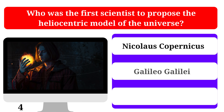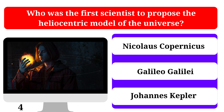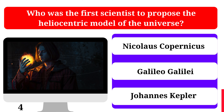Who was the first scientist to propose the heliocentric model of the universe? Galileo Galilei, Nicholas Copernicus, or Johannes Kepler. The correct answer is Nicholas Copernicus.